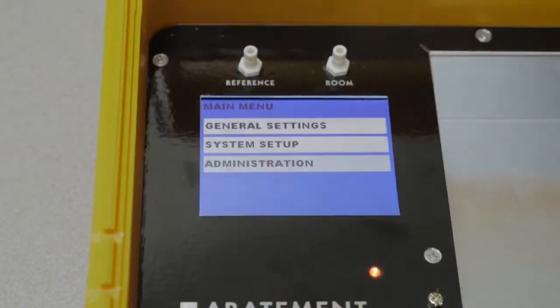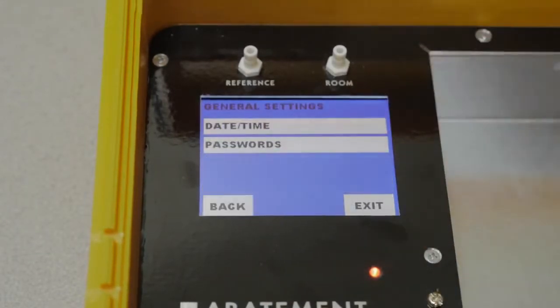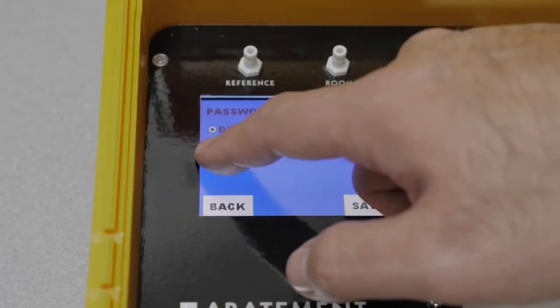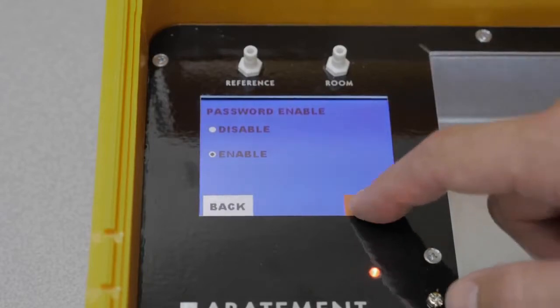Now we'll set the password. Select General Settings, Passwords, and first Password Enable. Enable the password and save.